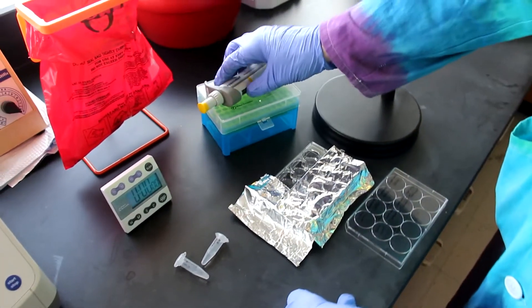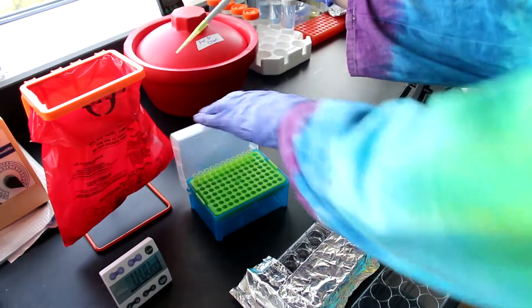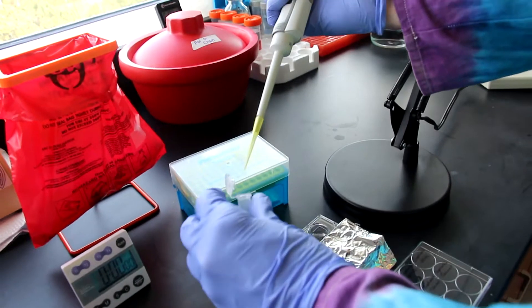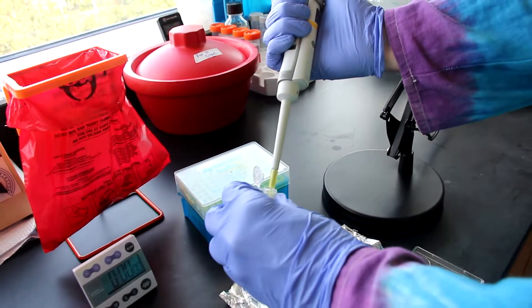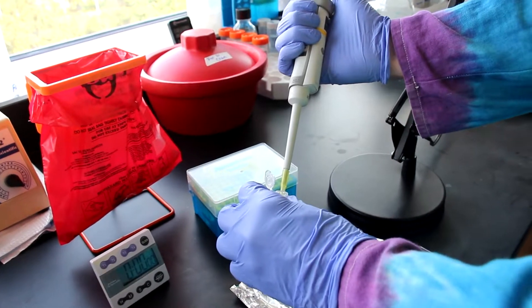When you're ready, again with a P20 pipette, quickly add 20 microliters of vehicle to each well, wait five seconds, and then photoconvert for a minute.